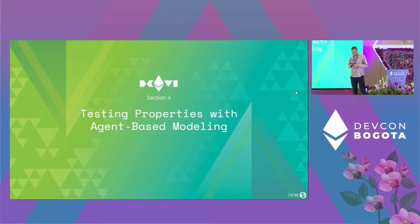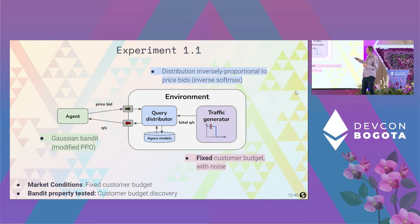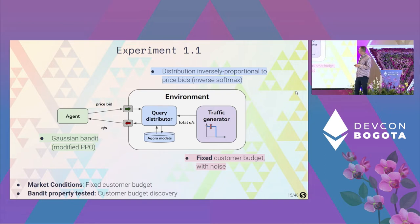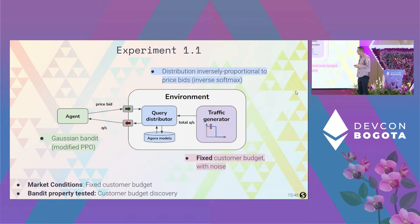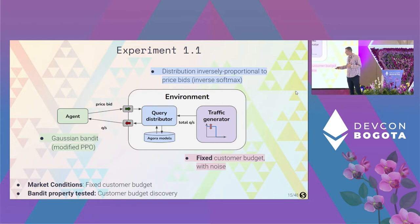Now the most important part: testing system properties with agent-based modeling. In the first set of experiments, we focus on single-agent simulation — just testing the properties of one agent. This is a single Gaussian bandit with a modified PPO policy update rule. The query distributor is a naive version where business is simply inversely proportional to price. The first step uses a fixed customer budget with some noise, and we're testing the property of customer budget discovery.